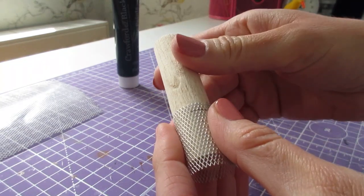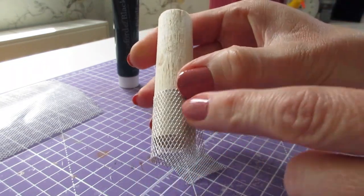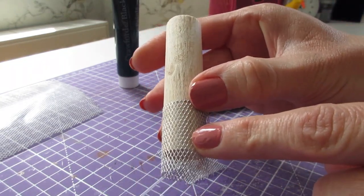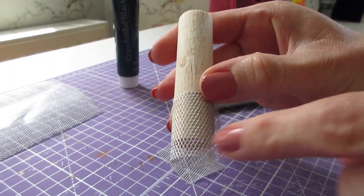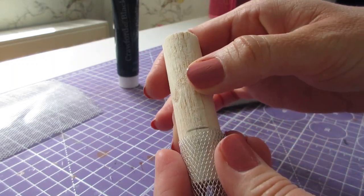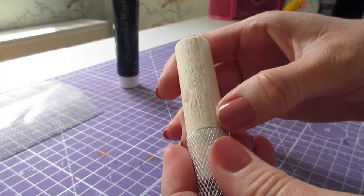Then pull the mesh down so that 22 millimeters or seven-eighths of an inch is still on the dowel, and I made myself a little pencil mark so I know how high up to go.